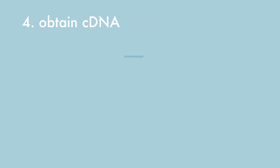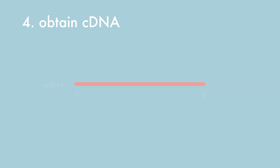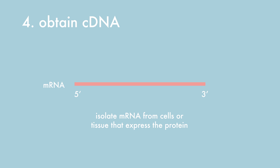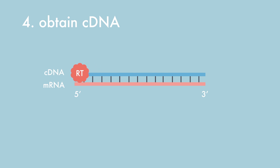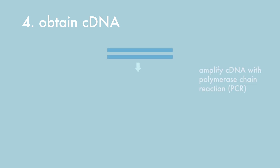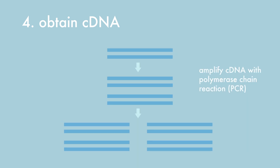The next step is to obtain the actual DNA, or in other words, the copy DNA that codes for the protein. To obtain the coding DNA of the protein, one starts by isolating mRNA from cells and tissues that express the protein. Next, the mRNA is reverse transcribed into copy DNA. The next step is to amplify specifically the copy DNA for the protein of interest using the polymerase chain reaction (PCR).